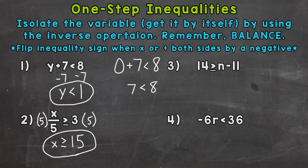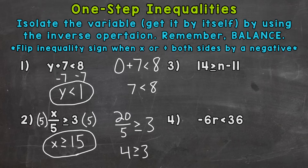So x has to be greater than or equal to 15 in order to be a solution to that inequality. Let's try something greater than 15 — let's try 20. Twenty divided by five is greater than or equal to three. Twenty divided by five is four, and four is greater than or equal to three, so that's true. Twenty would be a solution. Now 15 is included in the solutions for number two because it's an 'or equal to' inequality.